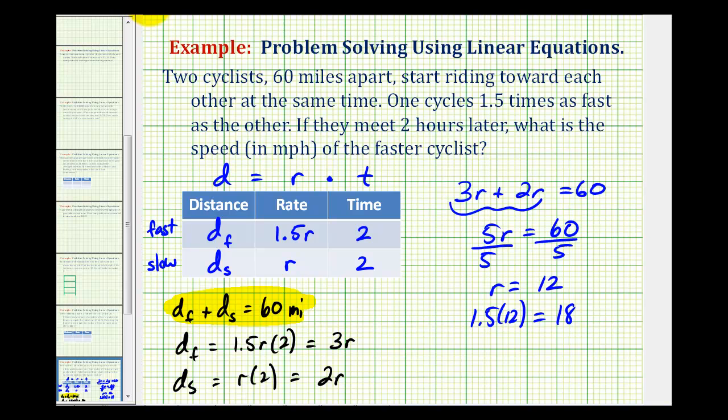which represents the speed in miles per hour. So the faster cyclist is traveling an average speed of 18 miles per hour.